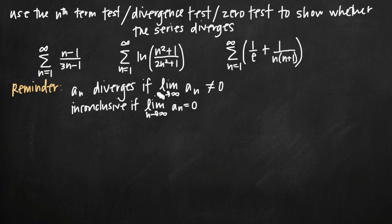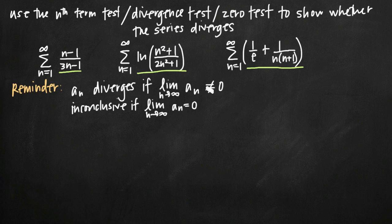Here's what the divergence test says. If we take any series — we'll call it a_n — and we take its limit as n goes to infinity, if that limit is not equal to zero, then the test tells us that the series diverges. Any of the series we have here can serve as a_n, and we evaluate the limit to see whether or not it equals zero.